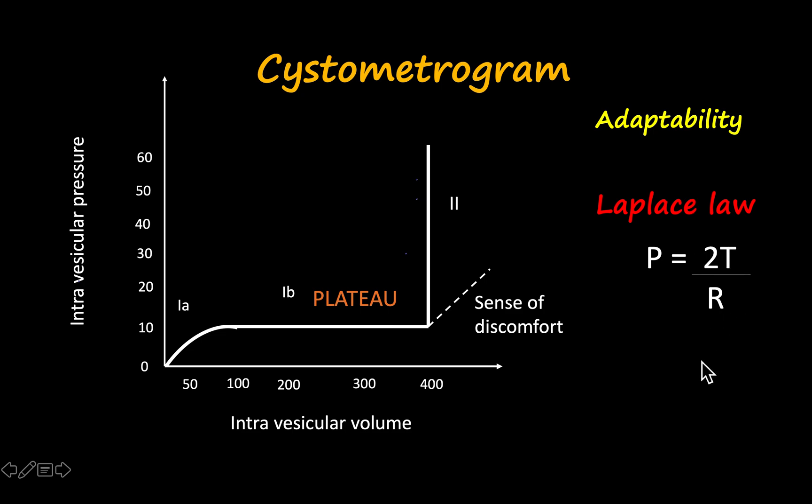The cystometrogram is significant because it provides information about both the filling and emptying phases of the bladder. It can be used to diagnose stress incontinence — leakage of urine when intra-abdominal pressure rises — as well as urinary tract infections, urinary problems in multiple sclerosis and stroke patients, ureteric obstruction, detrusor instability, and spinal shock patients. It is a very important urodynamic study used in cases where urinary pathology is suspected.